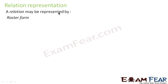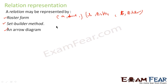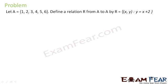A relation can be represented in three ways: roster form, set builder form, or arrow diagram form. In roster form, all elements are listed — for example {(a, amid), (b, bit2), (b, boli)}. In set builder form, you write something like {(x, y) | x ∈ R, y ∈ R with some condition}. In arrow diagram form, you draw two sets A and B and draw arrows showing the mapping.